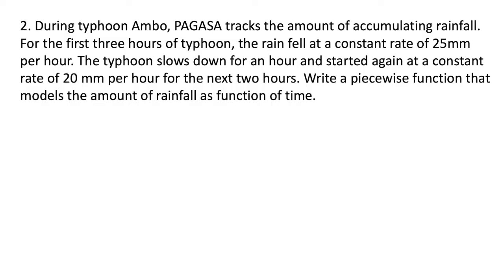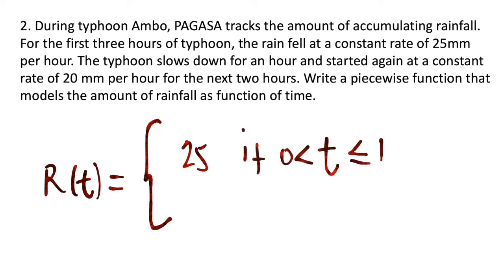Let's write the amount of rainfall with respect to time: R(t). For our first condition, the rain fell at a constant rate of 25 millimeters per hour. Since this is a constant function, we write 25 if the rain fell greater than zero or less than or equal to 1 hour.